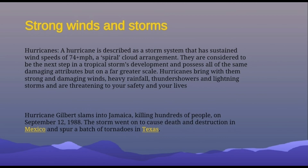In Jamaica, we had Hurricane Gilbert, which slammed into Jamaica and killed hundreds of people on September 12th, 1988. The storm went on to cause death and destruction in Mexico and spawned a batch of tornadoes in Texas — showing how one event can cause another. Hurricanes have many different effects: loss of electricity, loss of water, damage to property, vehicles, homes, and pollution of water supply and rivers. It is not average rainfall or wind speed — it is extreme.